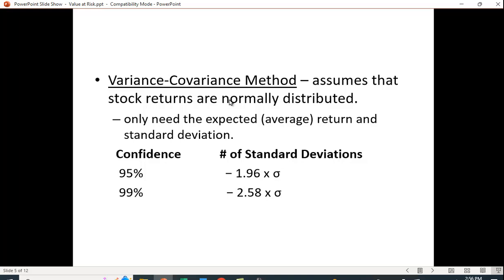With the variance-covariance method, it assumes that stock returns are normally distributed. We have, with 95% confidence, minus 1.96 times the standard deviation, or 99% minus 2.58 times the standard deviation.